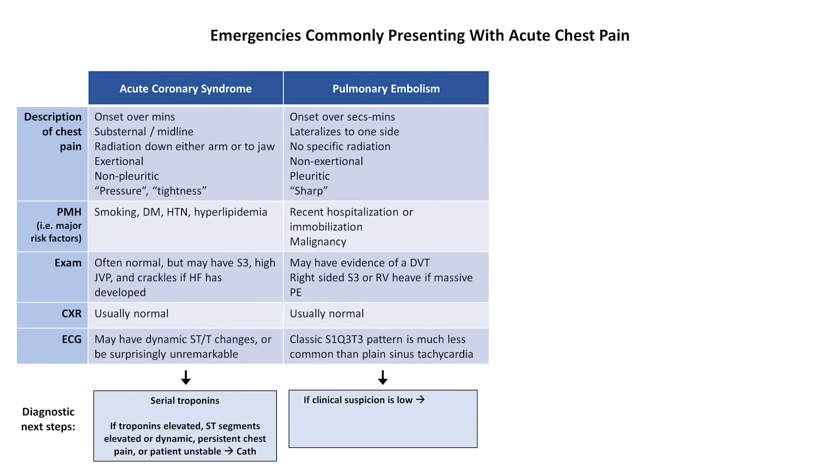If clinical suspicion of a PE is relatively low, a normal D-dimer test will rule it out completely, but patients with either high suspicion of PE or those with an elevated D-dimer should undergo a CT angiogram if sufficiently stable enough for the trip to radiology.